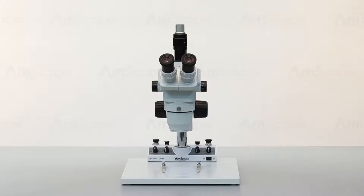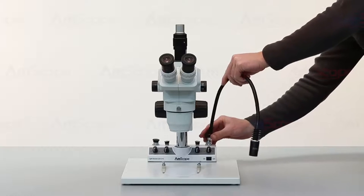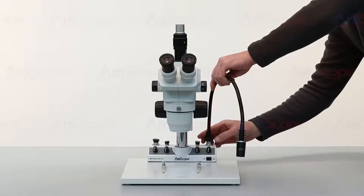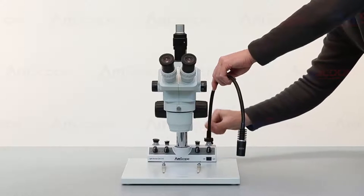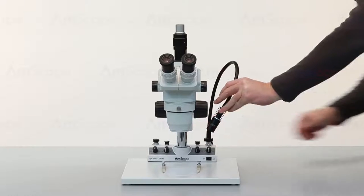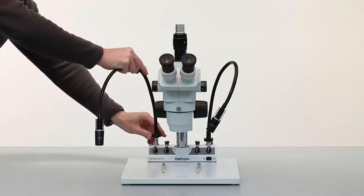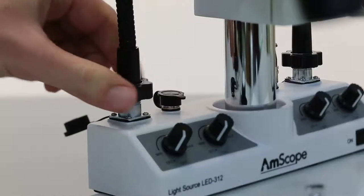Now to attach the lights. I'll start by attaching the gooseneck lamps. The goosenecks attach to the outer electrical ports. Line up the 4-pin connector and gently push, then tighten the locking nut.